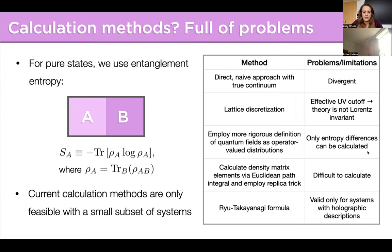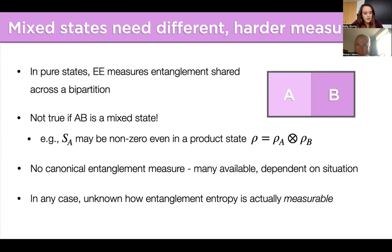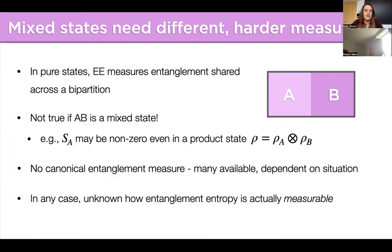In the last 20 years or so, there have been some very fruitful applications of the Ryu-Takayanagi formula, but with this we're limited only to systems for which we have a holographic description. Moreover, detecting entanglement in mixed states is an even harder problem. We lose the interpretation of the von Neumann entropy as the entanglement shared across a bipartition, because even in a product state, the entanglement entropy of a subregion could be non-zero if it itself is a mixed state. There are many measures available for different situations, but few are ever calculable in practice. And further, in any case, we don't have a formalism for how entanglement is measurable. Our goal is to broaden the scope of systems in which we can study entanglement structure, and to do so in a way connected to experimental protocols.